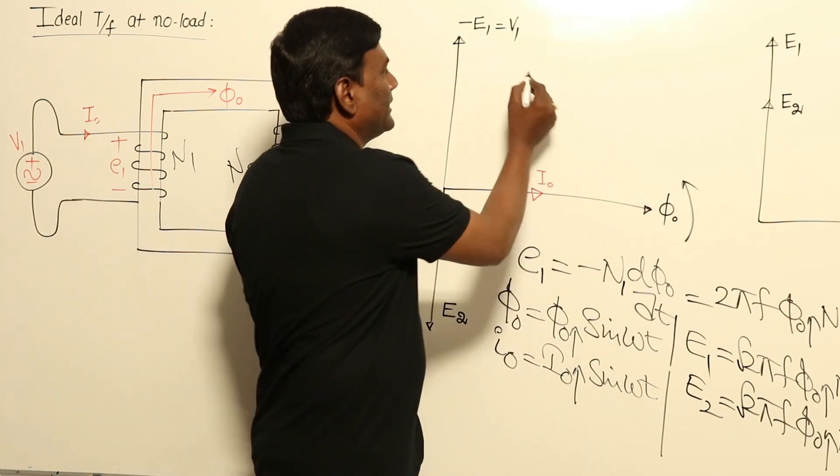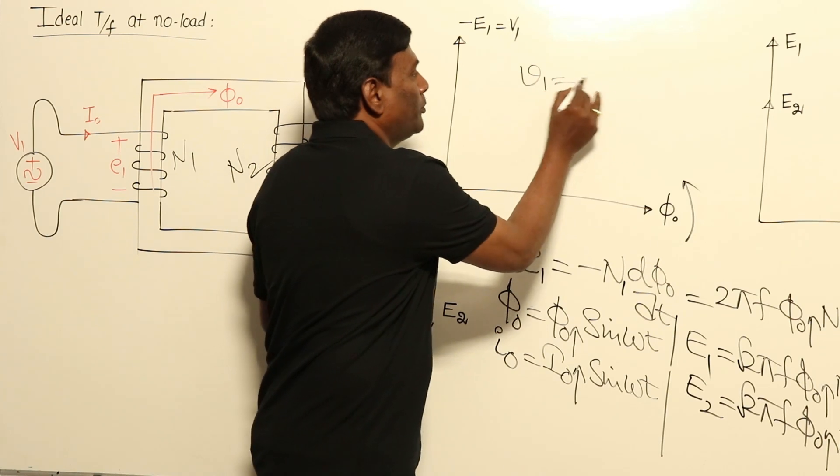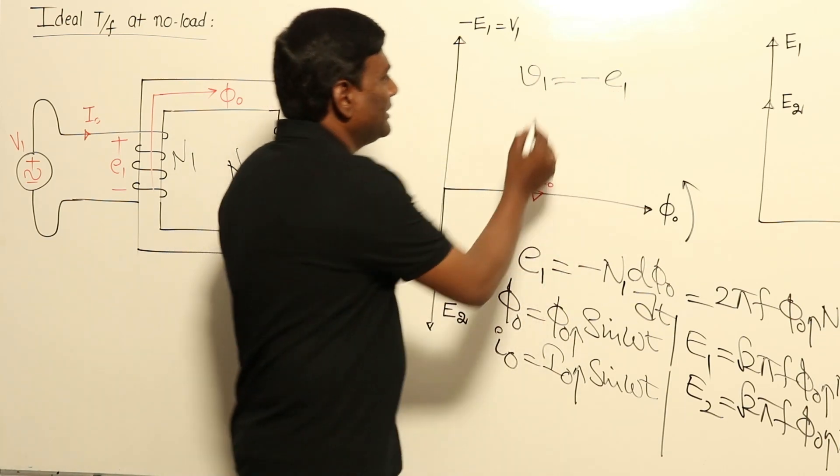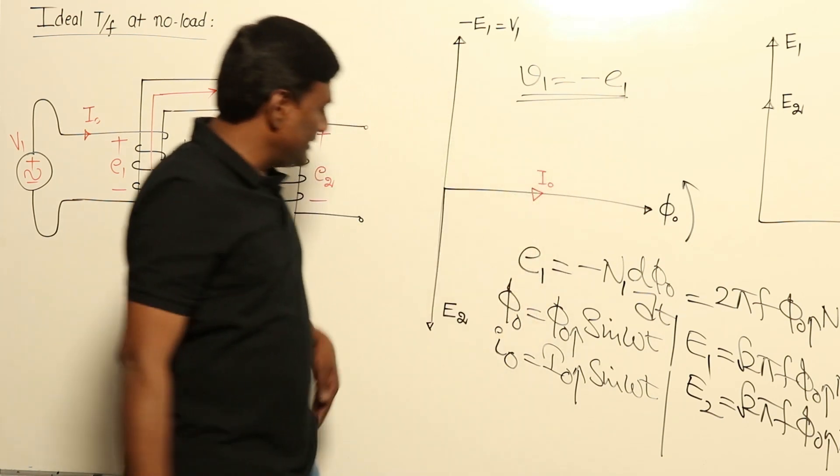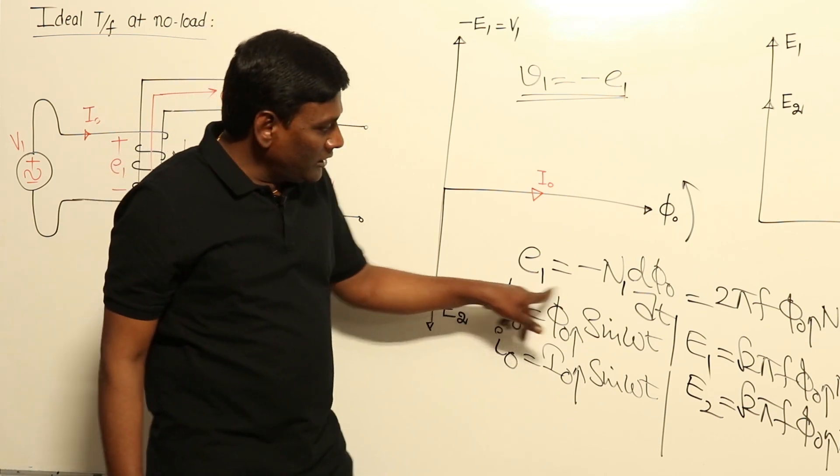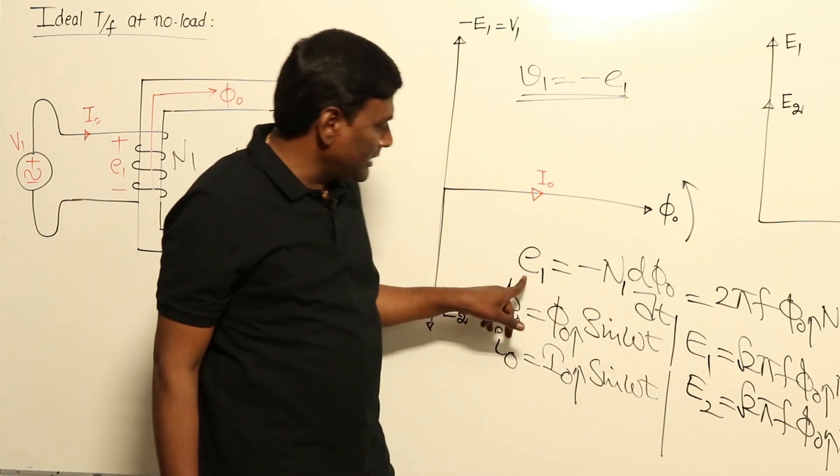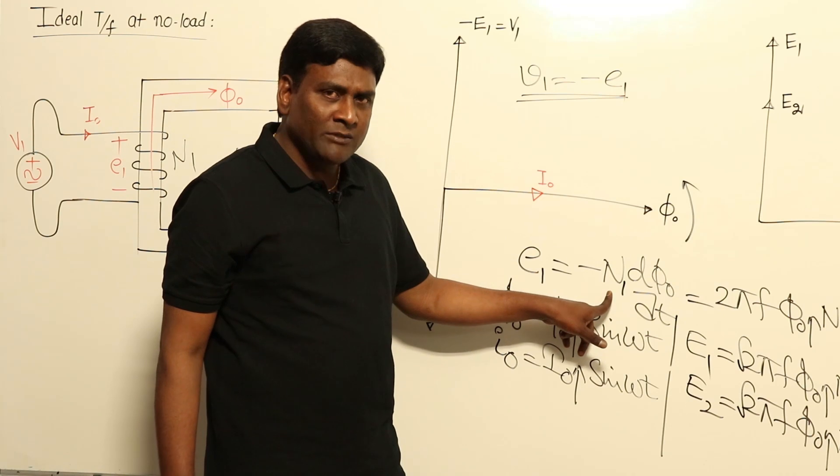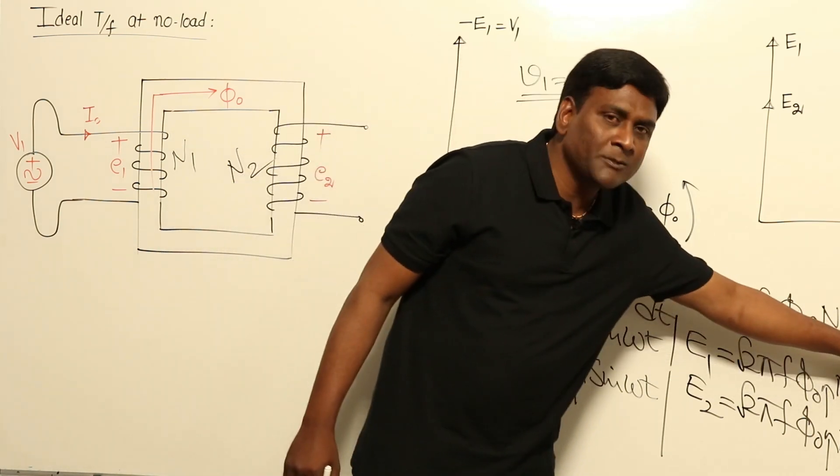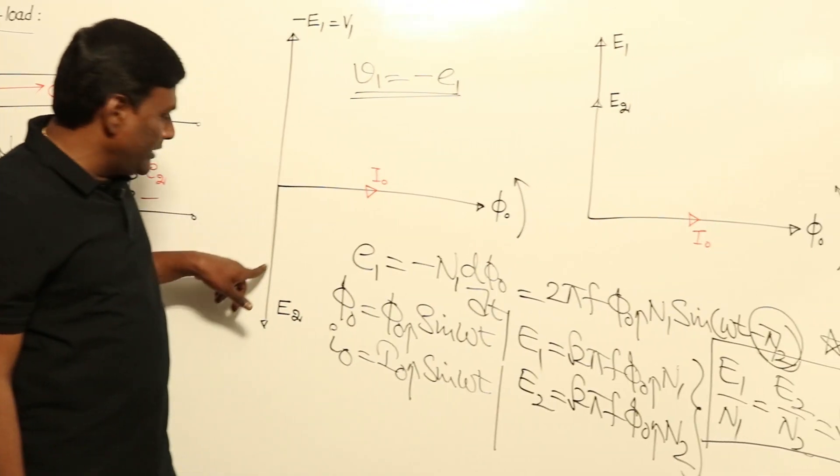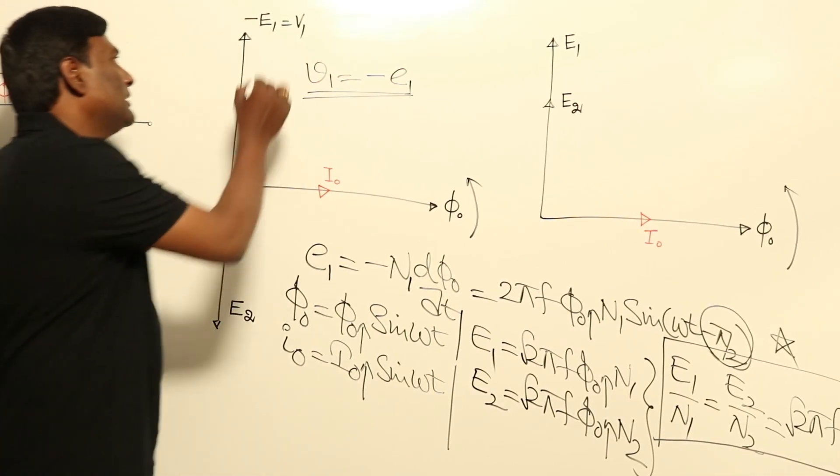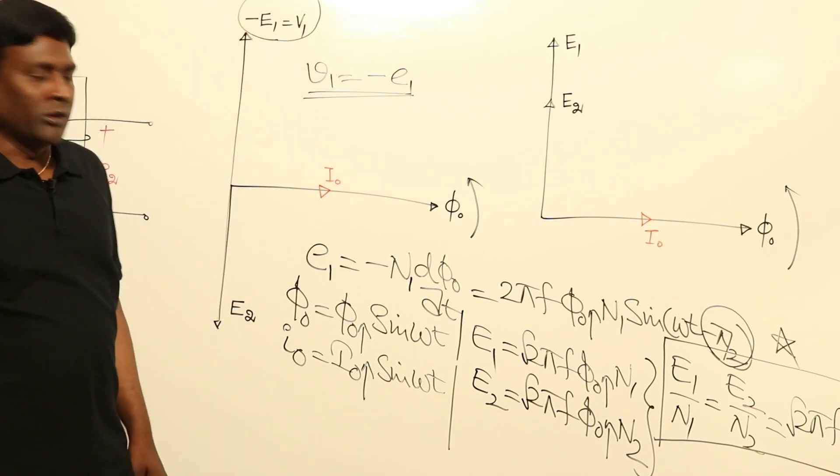That's why we can say that V1 equal to minus E1. Under that conditions, if E1 is here, E2 is going to be here. So for example, E1 and E2 are in line because E1 means this equation will be N1, E2 this equation will be N2. Under that condition it will be minus π/2 only. So E1 will come here, minus E1 will come in opposite direction, 180 degrees, such that minus E1 is going to be equal to V1.